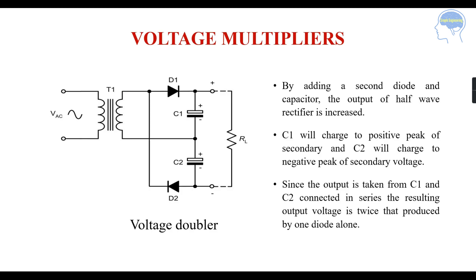Next is the voltage multiplier, specifically the voltage doubler. By adding a second diode and a capacitor to the output of a half wave rectifier, the output voltage will be increased. C1 charges to the positive peak of the secondary and C2 charges to the negative peak of the secondary voltage. Since the output is taken from C1 and C2 connected in series, the resulting output voltage will be twice that produced by one diode alone.